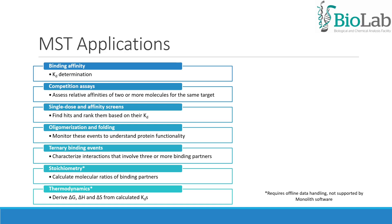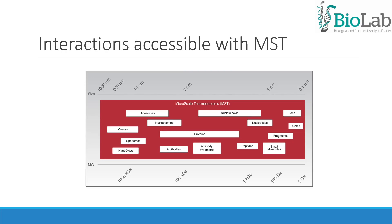The main applications of MST are binding affinity measurements, competition assays to access relative affinities of two or more molecules for the same target, single dose and affinity screens, as well as studying oligomerization, folding, stoichiometry, and thermodynamics. The monolith can measure as little as the binding of a single ion or small molecule to a target, as well as the binding of large complexes such as ribosomes.